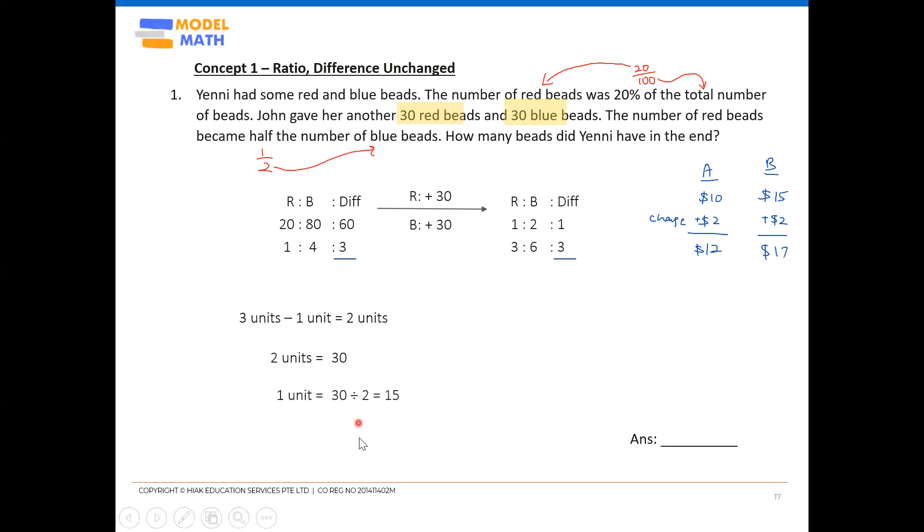So of course, we always find one unit value. Every time you get one unit, read back the final question to see what is required. How many beads did Yeni have in the end? Beads means total beads in this case. In the end. So you might want to just quickly underline all these keywords—in the end and beads. In the end makes you look at the after part. Your total beads in the end is nine units, 3 plus 6. And of course, you'll go on to find the value of nine units. It'll be 135 beads.